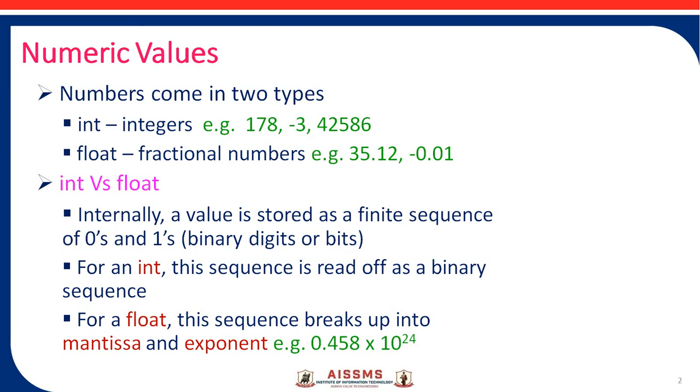We have to represent these values in our computer system. Both integer numbers and floating-point numbers are represented using a sequence of zeros and ones, called binary format. When there is an integer value, it is directly converted into a binary string and represented in your computer system.